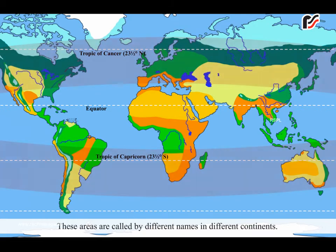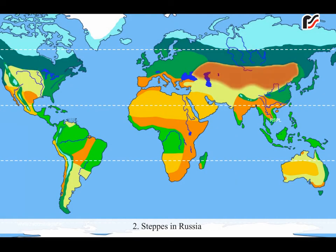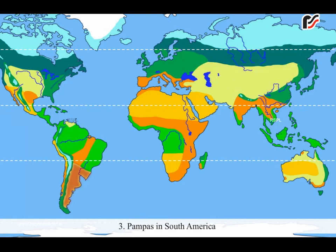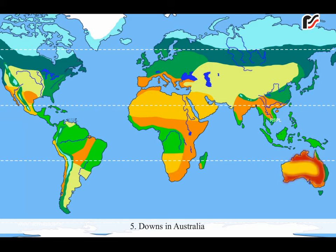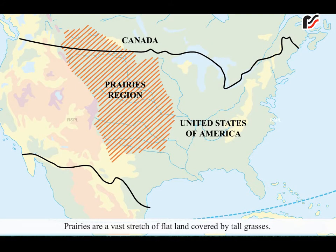These areas are called by different names in different continents: Prairies in North America, Steppes in Russia, Pampas in South America, Veld in South Africa, Downs in Australia, and Savannah in Central Africa.